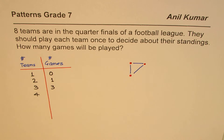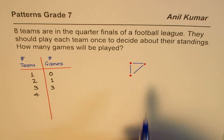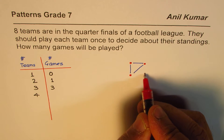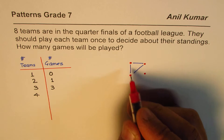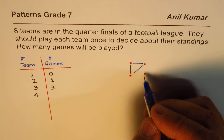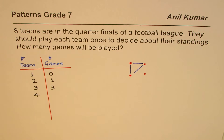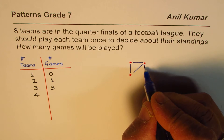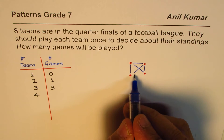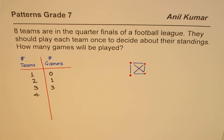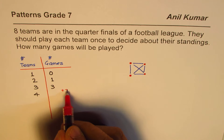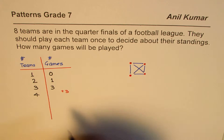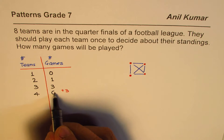When the fourth team comes, we already have three games being played between those three teams. The fourth team plays one game with each of the others, so we are adding three more games. It becomes three plus three, which is six games for four teams.